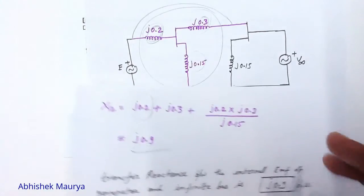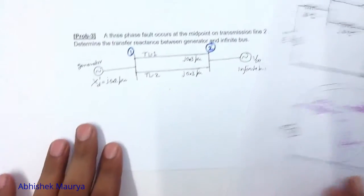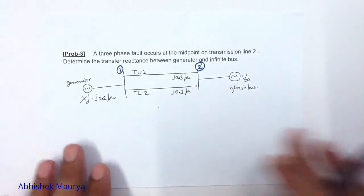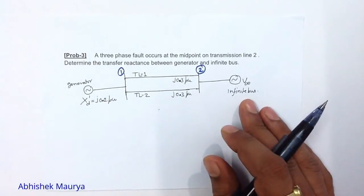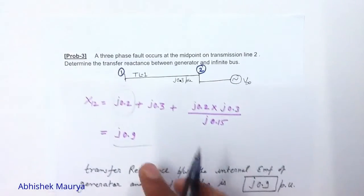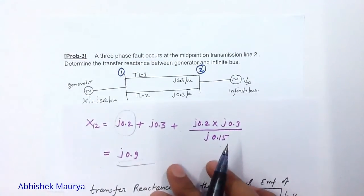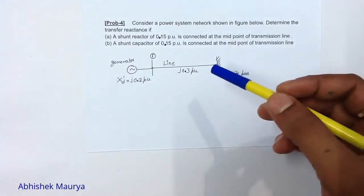After calculation, X12 equals J0.9. So the transfer reactance during the fault between the generator and infinite bus is J0.9 per unit.